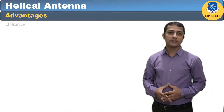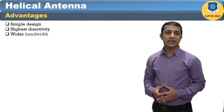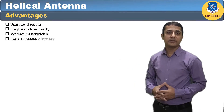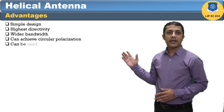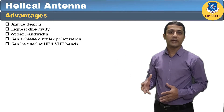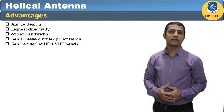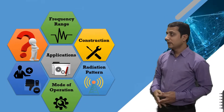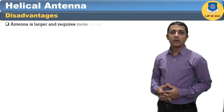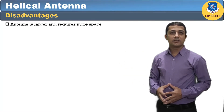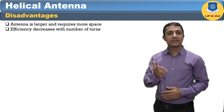The advantages of helical antenna are: simple design, highest directivity, wider bandwidth, can achieve circular polarization, and can be used at HF and VHF bands. The disadvantages are: the antenna is larger and requires more space, and efficiency decreases with number of turns.